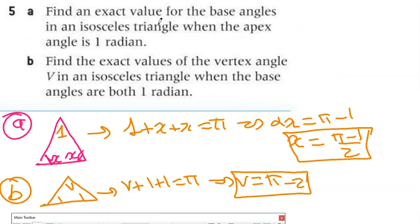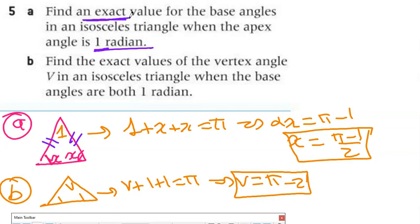Number 5: find an exact value for the base angles in an isosceles triangle when the apex angle is 1 radian. In an isosceles triangle, the two base angles are equal. The sum of angles in any triangle is 180 degrees, which equals π. Working in radians: 1 + x + x = π, so 2x = π − 1, and x = (π − 1) over 2.